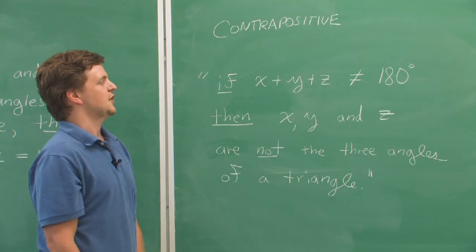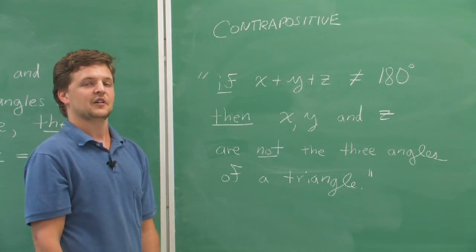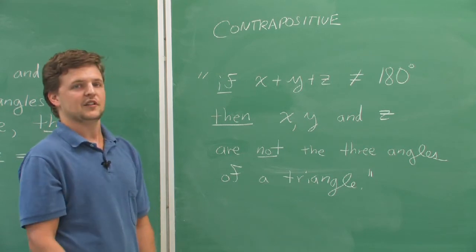Then, x, y, and z are not the three angles of a triangle. That's the original first part, now at the end and negated.